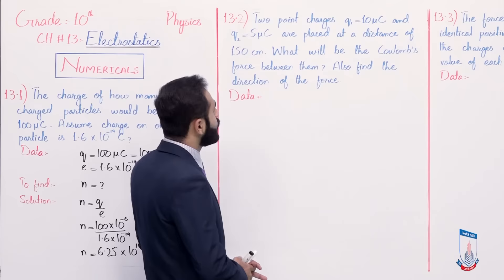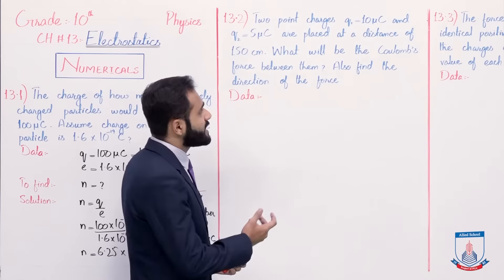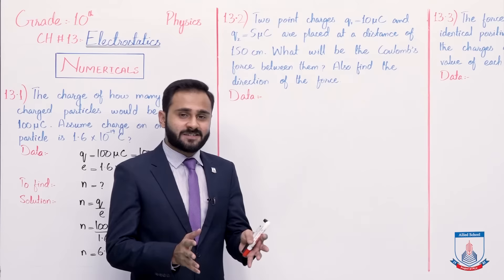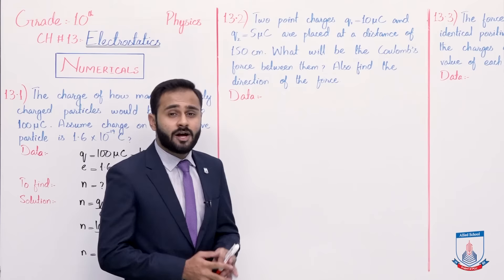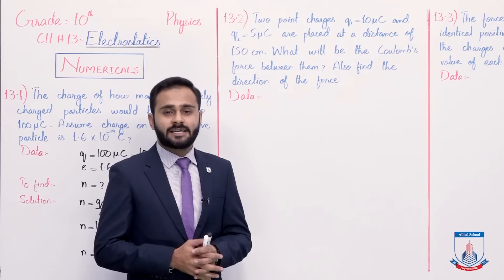Also find the direction of the force. Is numerical mein hum se kaha gya hai ka two point charges hain. q1 charge that is 10 micro coulomb and q2 is 5 micro coulomb are placed, yeh ek distance per placed hain and the distance is 150 centimeter. Toh in ke darmiyan coulomb force kitnay hogi aur us force ki direction bhi batani hai. So first of all data note down kar lete hain.